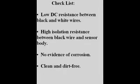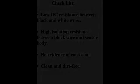If the DP-15 has low DC resistance between the black and white wires, has a high isolation resistance between the black wire and the metal case, has no evidence of corrosion on the lid welds and has been cleaned of any dirt or contaminants, it can be reassembled and calibrated.